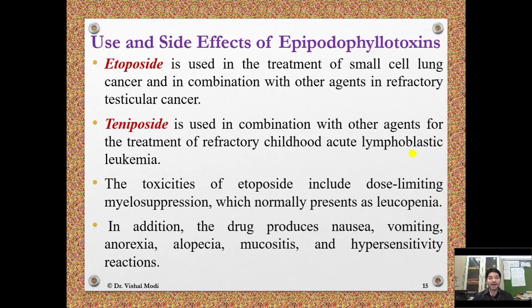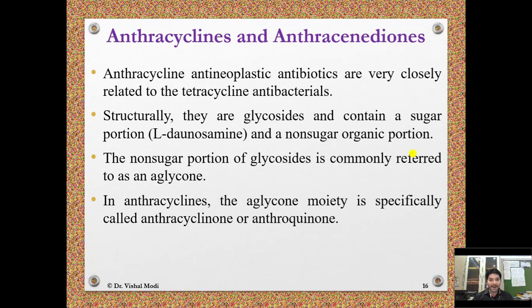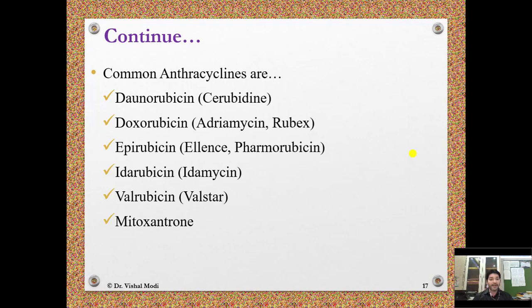Anthracyclines and anthracenediones: Anthracycline antineoplastic antibiotics are very closely related to the tetracycline antibacterials structurally. They are glycosides containing a sugar portion — L-daunosamine — and a non-sugar organic portion. The non-sugar portion of the glycoside is referred to as an aglycone; in anthracyclines this aglycone moiety is specifically called an anthracyclinone or anthraquinone.